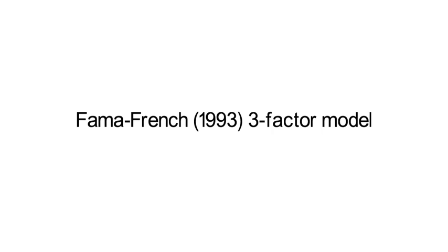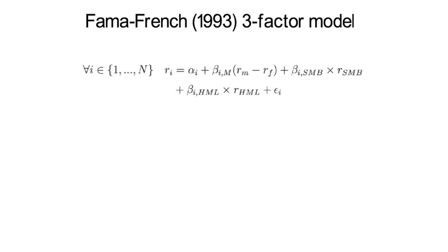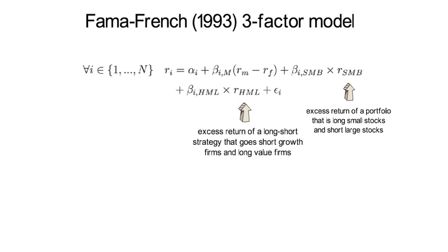Another prominent APT factor model is the Fama-French three-factor model from 1993. R_SMB is the excess return of a portfolio that is long small stocks and short large stocks. R_HML is the excess return of a long-short strategy that goes short growth firms and long value firms. As these factors are excess returns, the sample average is often used as a measure for the expected factor premium.